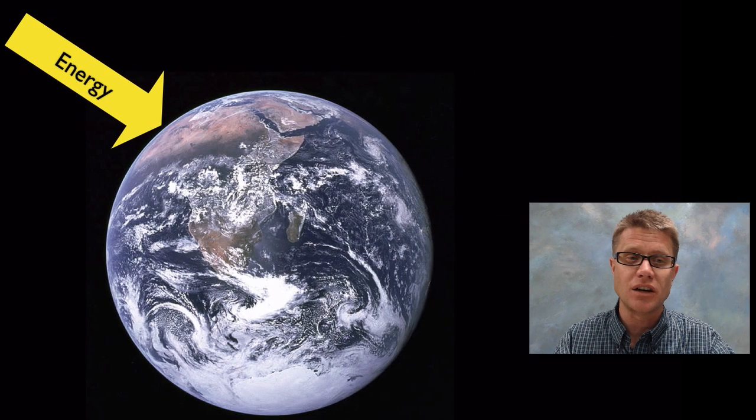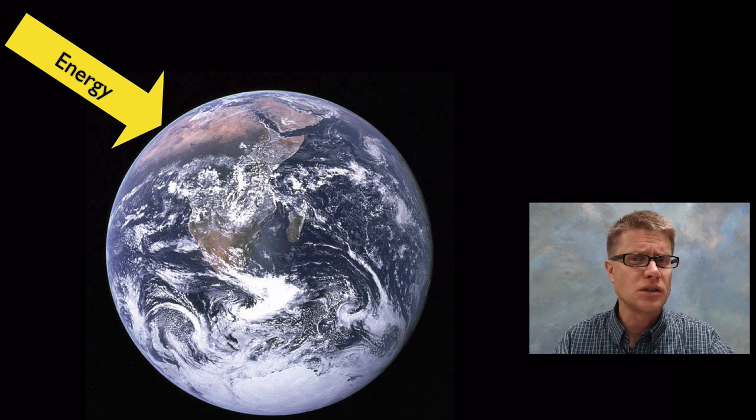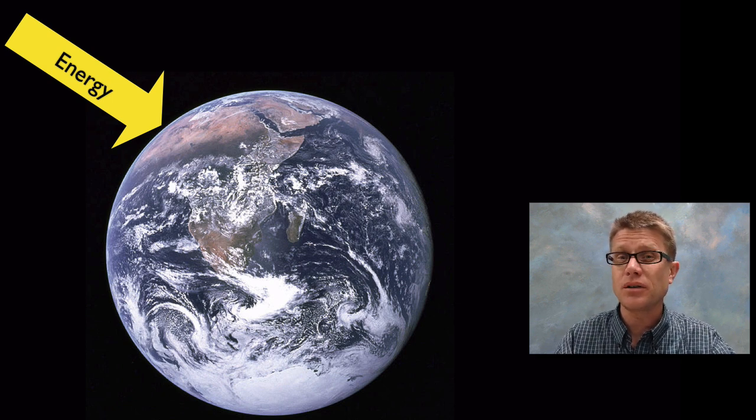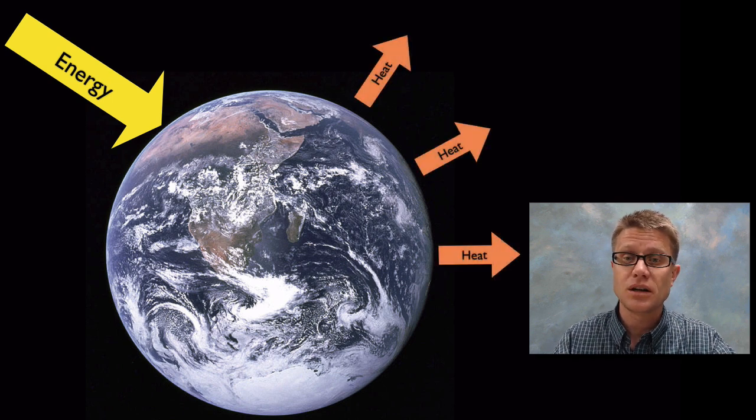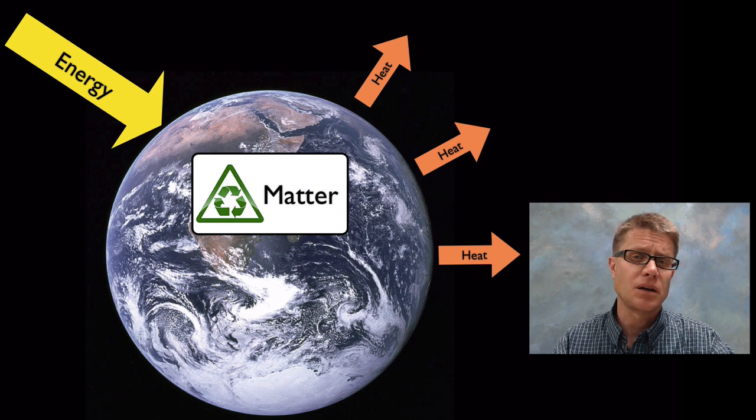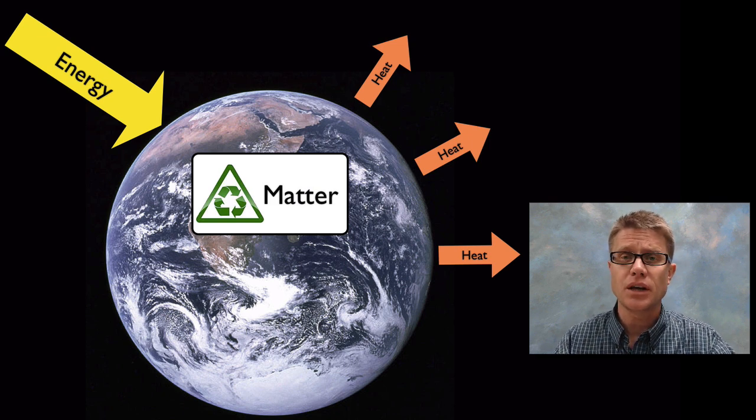So what are some important things you should understand? First of all, energy is delivered to the Earth primarily in the form of sunlight. We're going to utilize that energy, and most of it is eventually left as heat. But the matter of our planet is recycled over and over again.